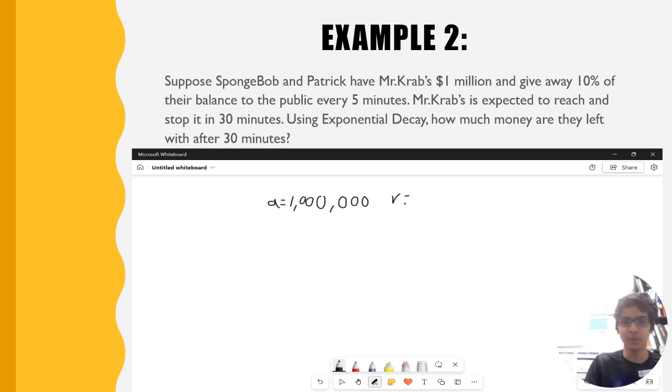We know our initial value or a is equal to $1 million. The rate is 10% in decimal, that's 0.10. The time is 30 over 5, because they are giving out money every 5 minutes,